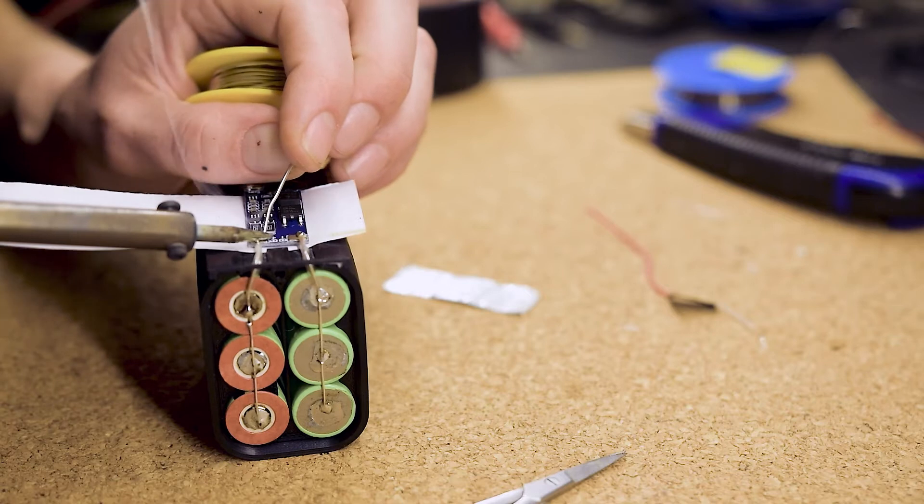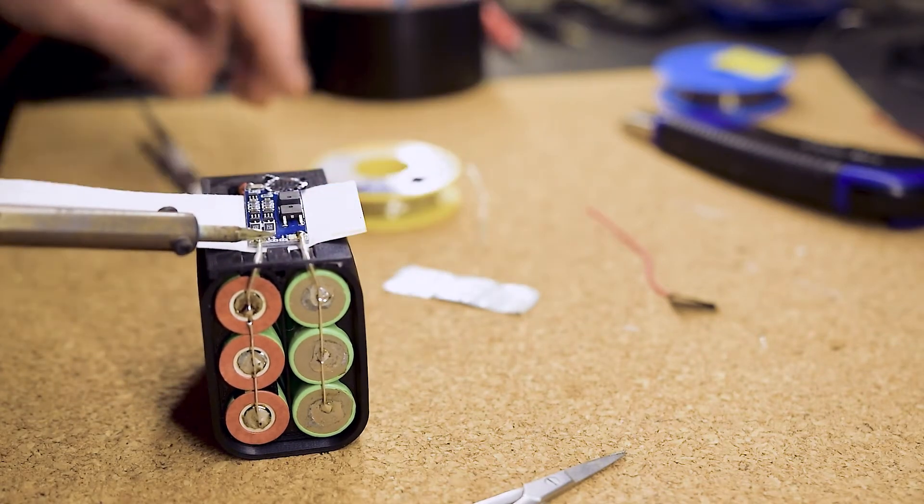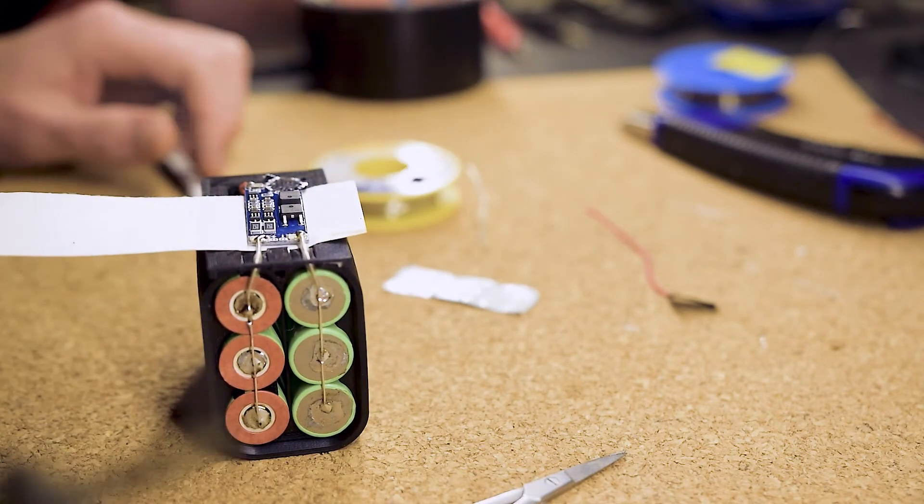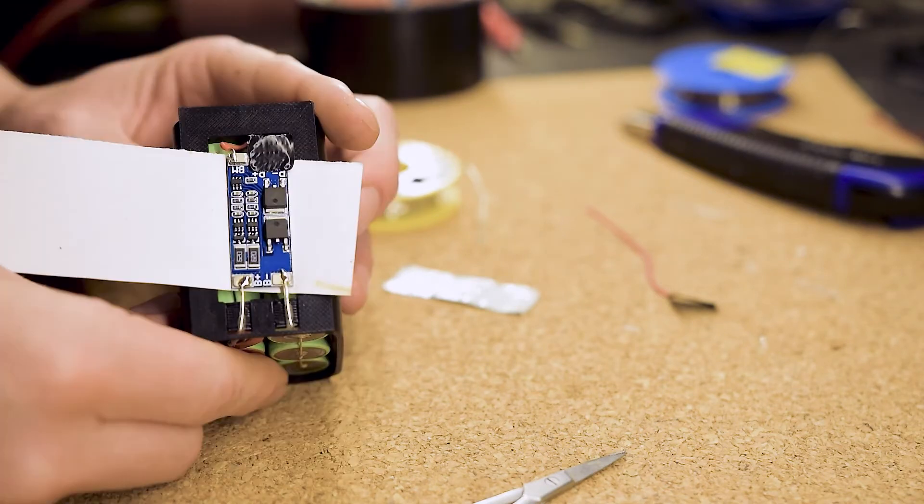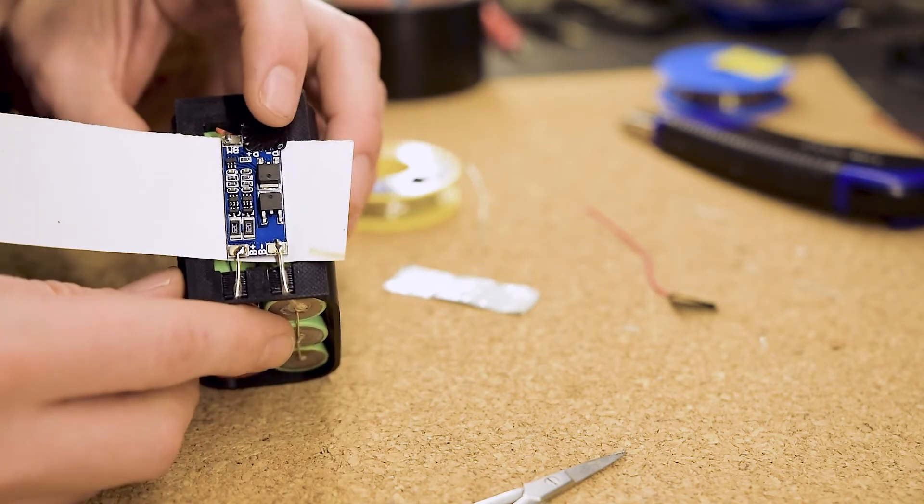Afterwards, cut the wire of the positive terminal so it ends above the pad labeled B-plus and solder it to the pad. Now, our BMS should be live.